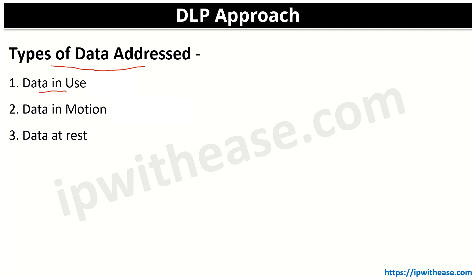The DLP approach addresses three types of data. The first is data in use — data that is currently being accessed, updated, read, or even erased. An example is a user performing an online banking transaction. Other examples include data that is copied to a USB or shared via an application.